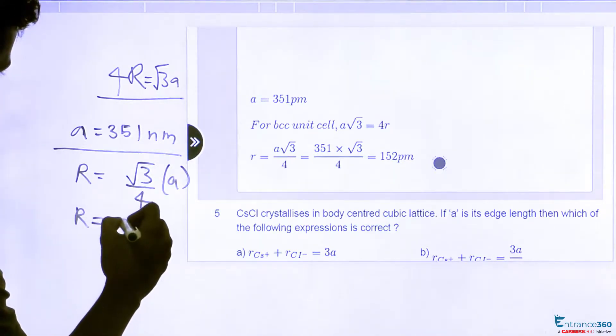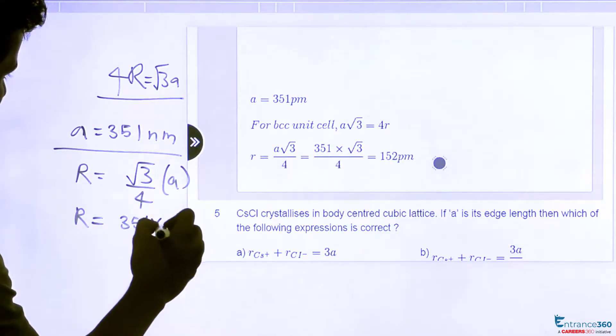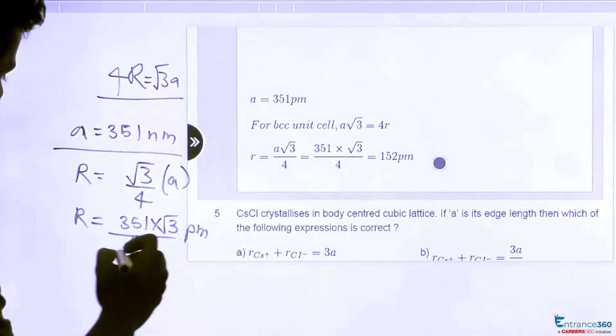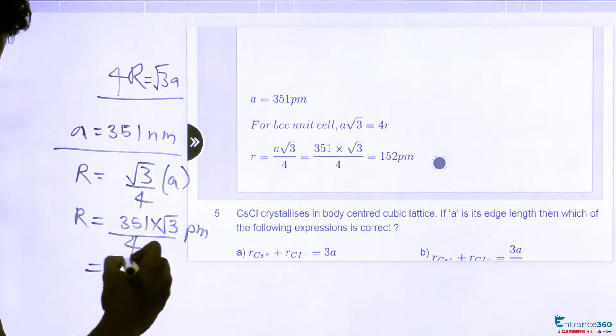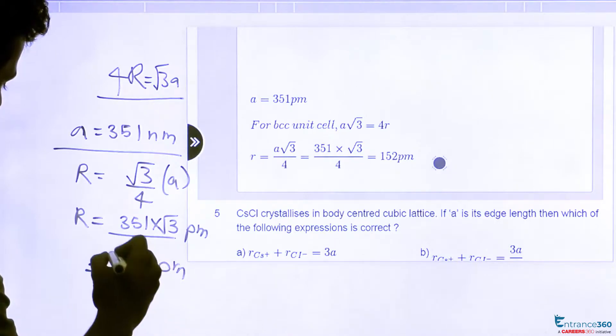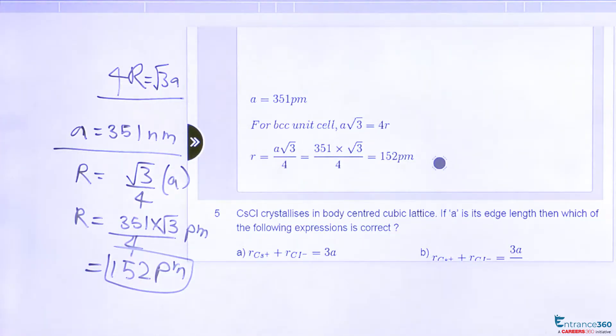So r equals 351 into root 3 by 4 picometer, which is 152 picometer. So the radius is 152 picometer.